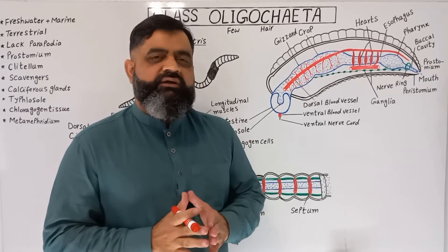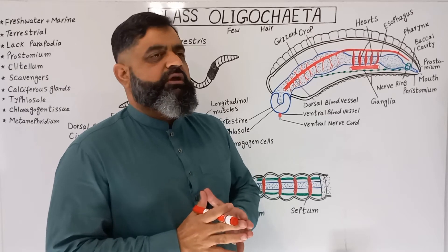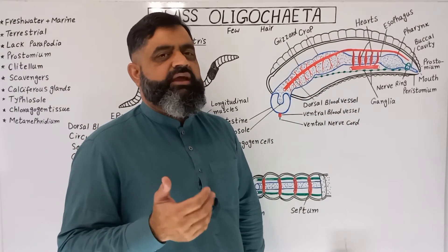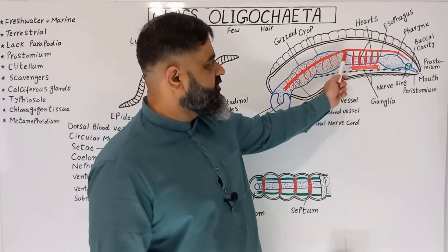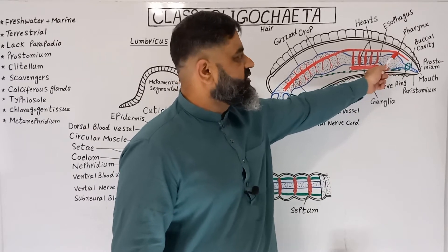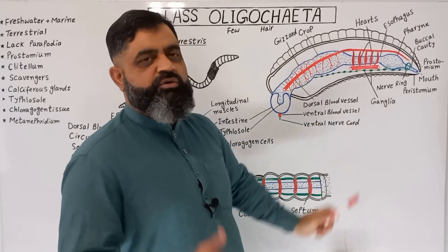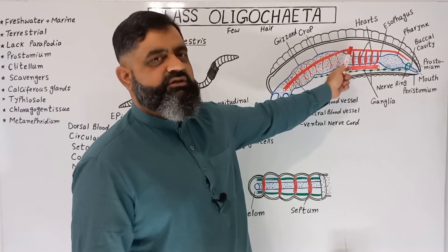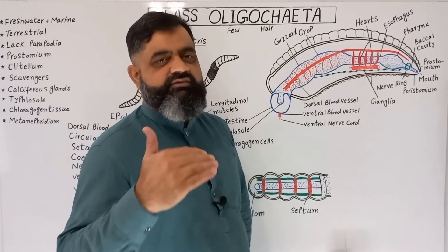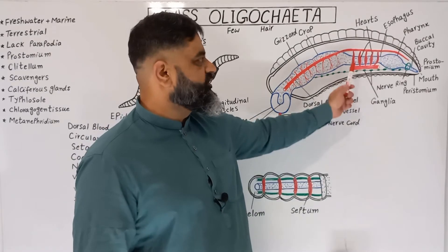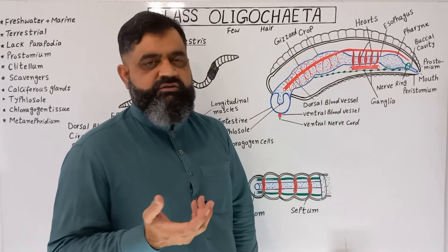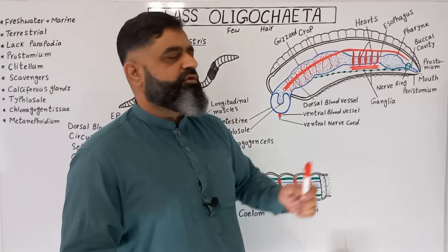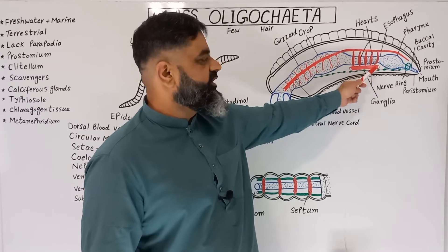The circulatory system of the earthworm is a closed circulatory system composed of five pairs of hearts and dorsal and ventral blood vessels and commissural blood vessels. On the dorsal side, as seen in this diagram in red, there is a dorsal blood vessel running from anterior to posterior, giving branches to all parts of the body. Near the esophagus, branches from the dorsal blood vessel connect to the ventral blood vessel — these connections are termed hearts. There are five pairs of hearts on the lateral side of the gut which pump blood from the dorsal blood vessel to the ventral blood vessel, and then blood moves from the ventral blood vessel to different parts of the body.